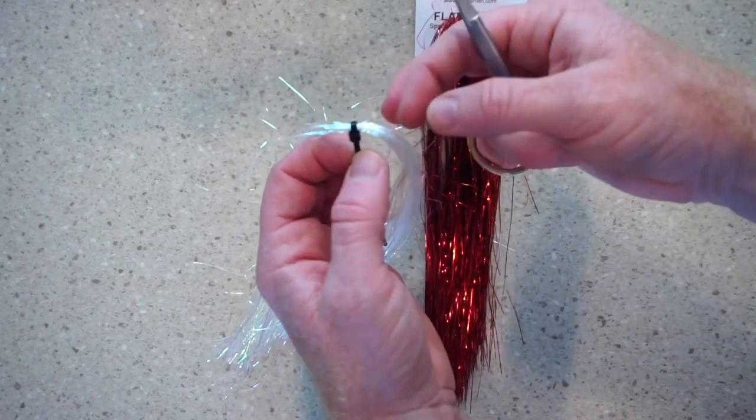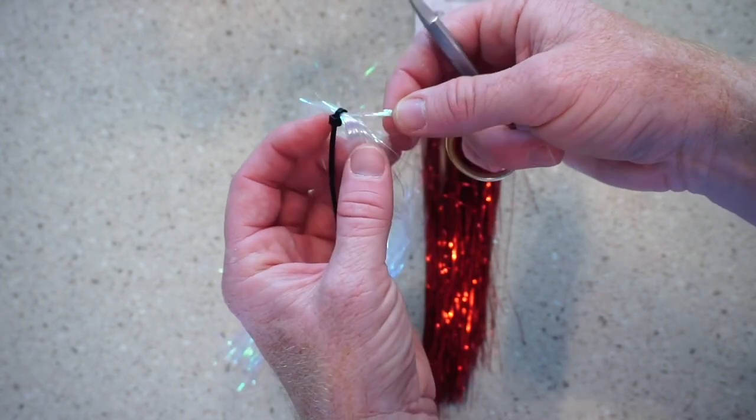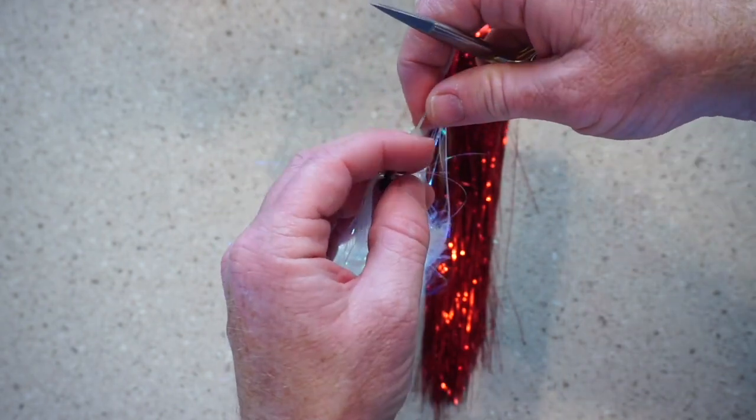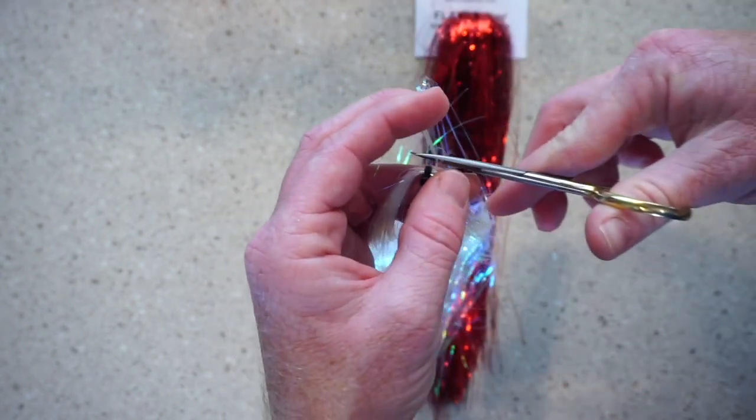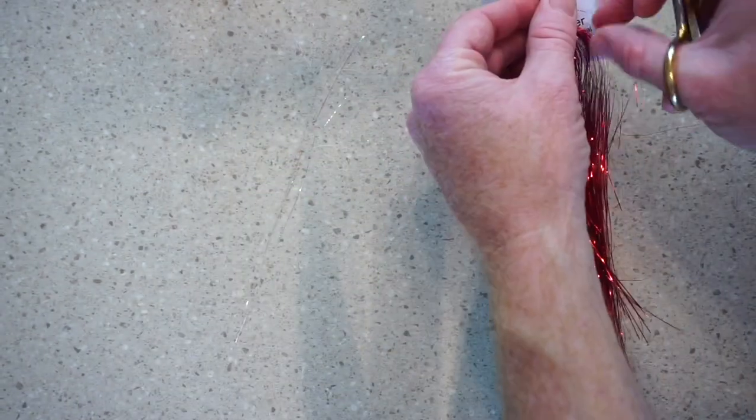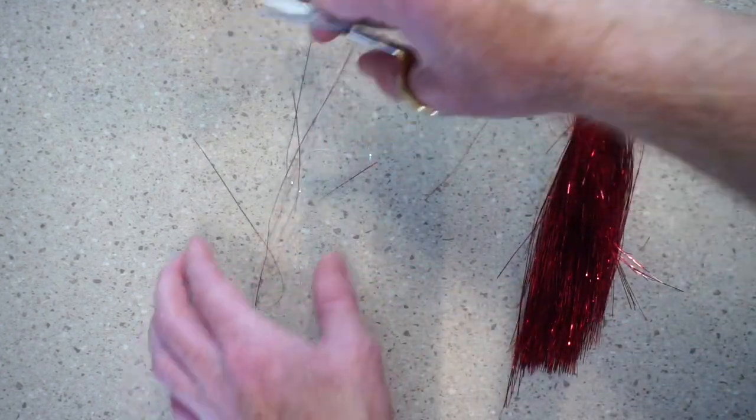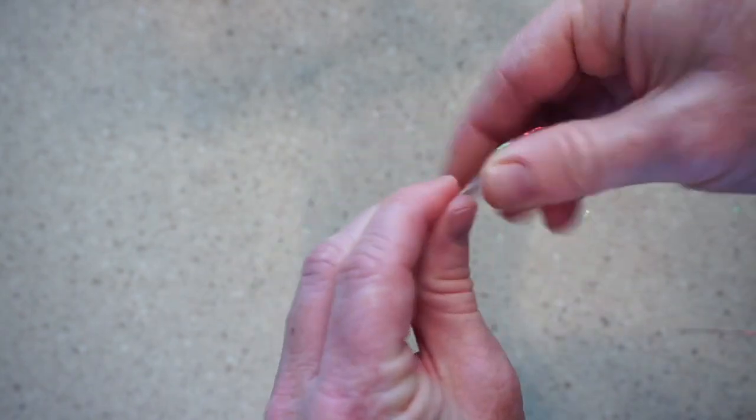So for the flashaboo, you want quite a bit of the pearl, probably a dozen or so strands. Just an accent, maybe half as much, five or six strands. So when you get it, just twirl it a little bit in your fingers to mix them up.